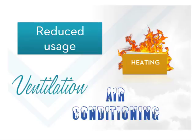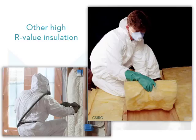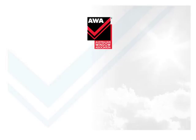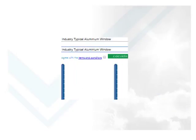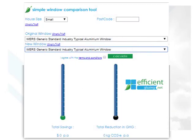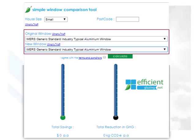However, to gain the greatest benefit given by a well insulated, thermally sound and energy efficient building, designers, builders and their clients should also select other high insulative building components such as high R-value rating insulation including batts. To inform consumers of potential long-term cost saving benefits of selecting energy efficient windows, the Australian Window Association have developed Efficient Glazing, a publicly available online window-to-window comparison tool. This tool empowers the community to make the best choices when purchasing efficient windows and doors. It allows a comparison to be made between an original window and a new replacement window, calculating a dollar value for total energy savings and the reduction in greenhouse gas emissions. It allows for different house sizes, locations and a variety of window frames and glass. The cost savings will, of course, increase with rising energy prices.